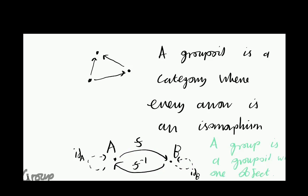A groupoid is just a category where all of the arrows are isomorphisms. And a group is just a groupoid with one object. This is similar to how we think about monoids - a monoid is a category with just one object. In a similar way, we can think of a group as a category with one object, but with the feature that each of its arrows are isomorphisms. So this is our basic perspective of what a group is.